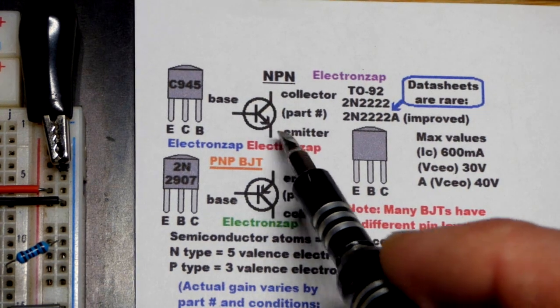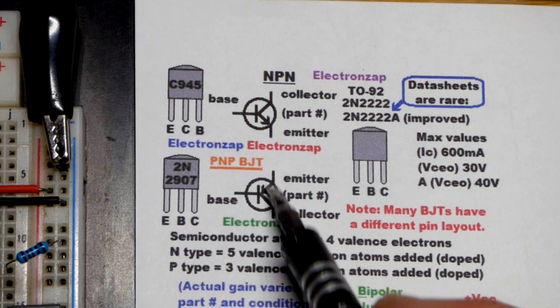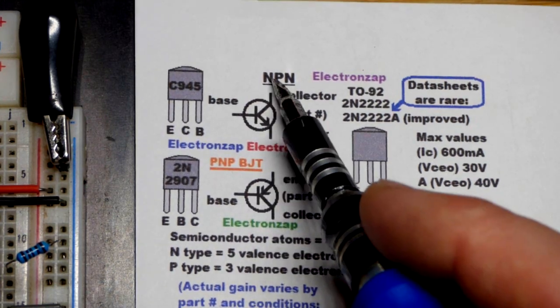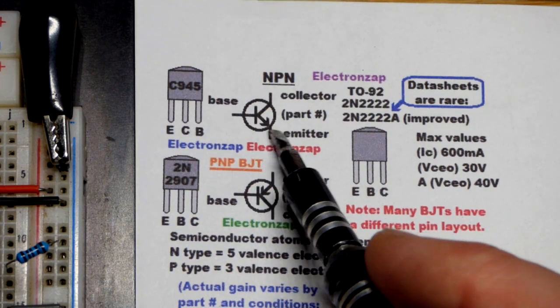It could be flipped around or spun or whatever. PNP, the arrow points the other way. It points in. So NPN could be thought of as the arrow is not pointing in.